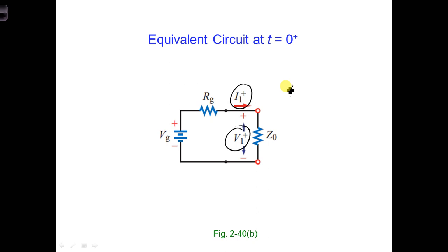That is, we can say I1 plus is equal to V1 plus over R, in this case, which is equal to z0.